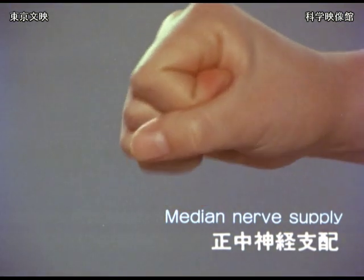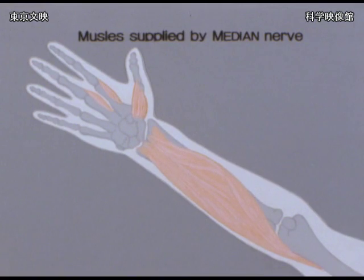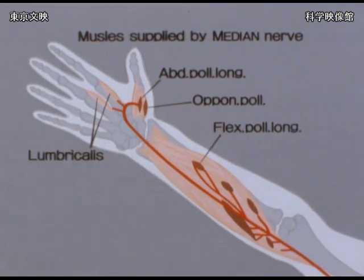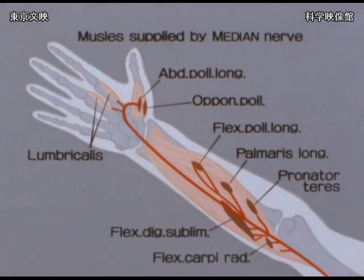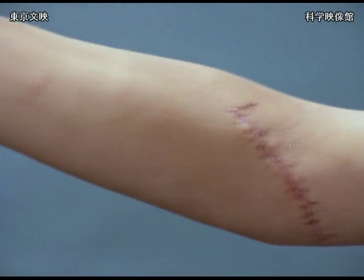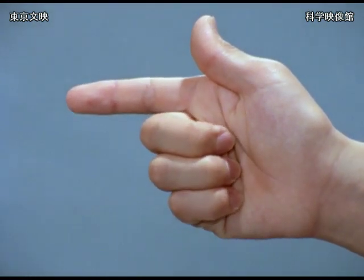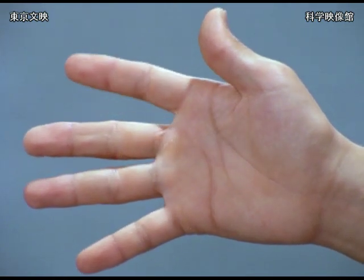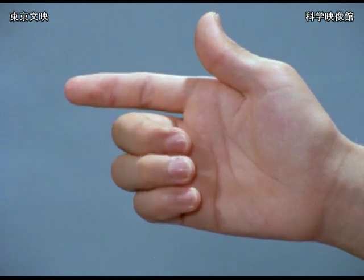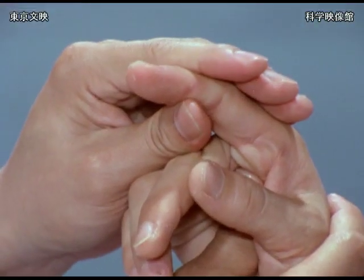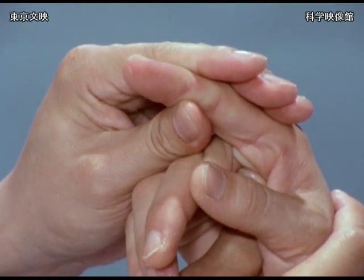Most of the finger flexors are innervated by the median nerve. In this patient, the median nerve has been completely divided at the elbow by trauma. The ulnar three fingers, however, can be flexed. This is explained by the fact that the profundus muscles are innervated by both the median and the ulnar nerves, and that the ulnar nerve supplies the muscles going into the ulnar three fingers. High median nerve paralysis should be diagnosed by whether the thumb and the index finger can be flexed or not.